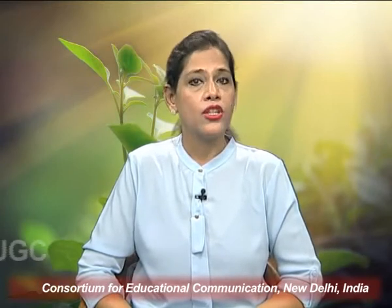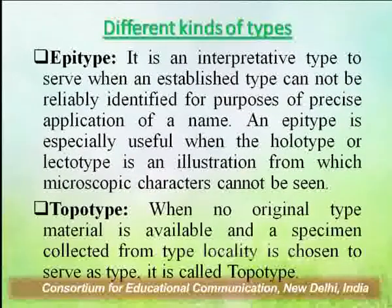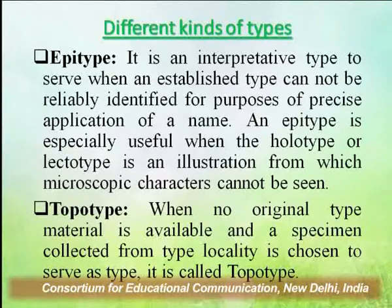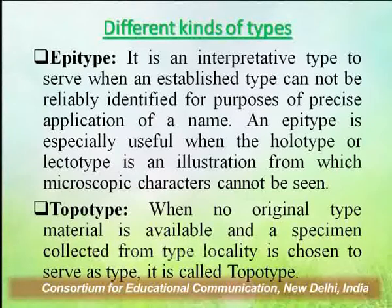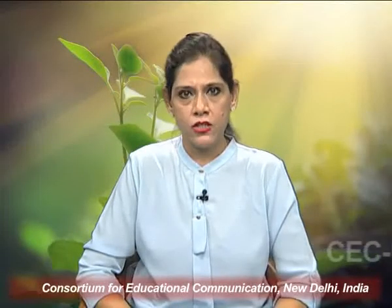As the material from which the new type is selected is not the original type material at all, it has been suggested that the selected specimen should not be called a new type but only a standard specimen. An epitype is an interpretive type to serve when an established type cannot be reliably identified for the purpose of precise application of a name. An epitype is especially useful when the holotype or lectotype is an illustration from which microscopic characters cannot be seen. When no original material is available and a specimen collected from the type locality is chosen to serve as type, it is called a topotype.